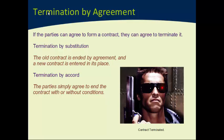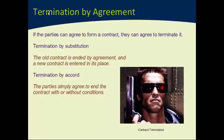Finally, we get to termination by accord — also very simple. This occurs when the parties simply agree to end the contract: they say we're done, that's enough. If the parties agree to do that and it's clear that they've agreed to do so, then they can't subsequently try to enforce any of those obligations. The obligations are over, they're done with the contract.